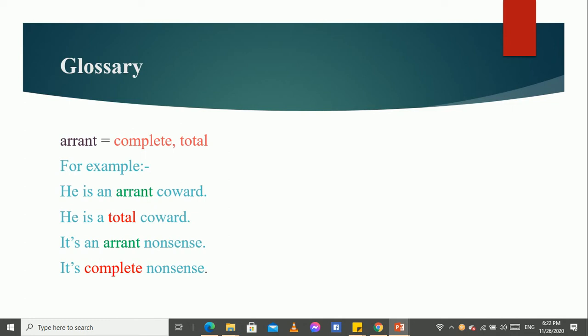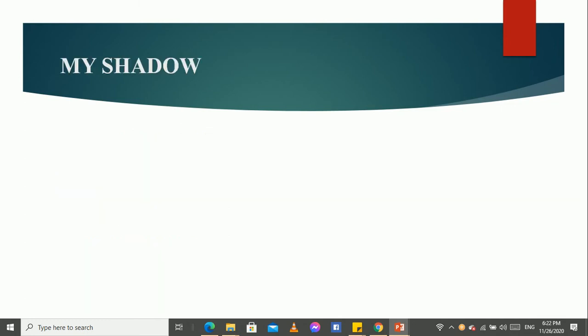The next example is, it's an arrant nonsense. So, here, in the place of arrant, we can use complete. So, what does the sentence become? It's complete nonsense.